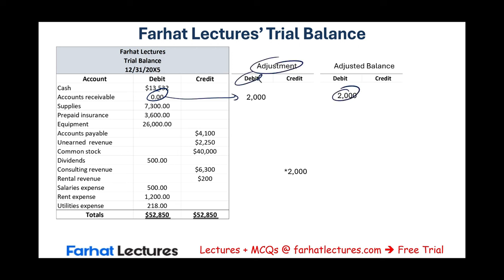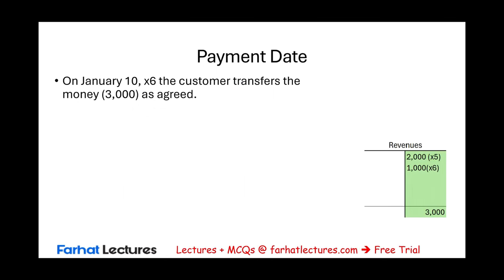Accounts receivable went from zero; we debited it as an adjustment of $2,000, so the ending balance is $2,000. Consulting revenue started at $6,300 — there was also an additional prior adjustment of $900, but setting that aside — plus $2,000 equals $8,300 as the adjusted balance. We'll see later that revenues will have a different adjusted balance because it was adjusted twice. These are the balances on December 31st from this adjustment.